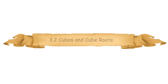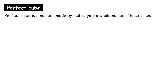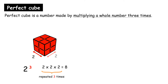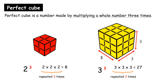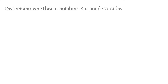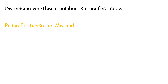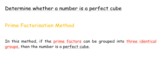3.2 Cubes and Cube Roots. A perfect cube is a number made by multiplying a whole number 3 times. For example, 2 cubed is 2 repeated multiply for 3 times, and 3 cubed is 3 repeated multiply for 3 times. We can also use the method of prime factorization to determine whether a number is a perfect cube. If the prime factors can be grouped into three identical groups, then the number is a perfect cube.